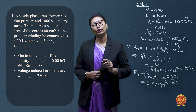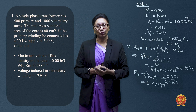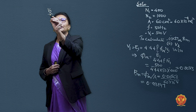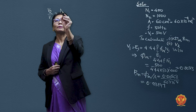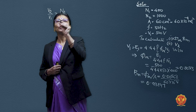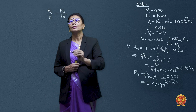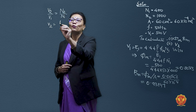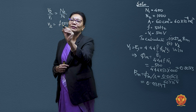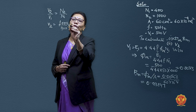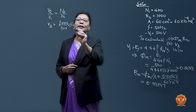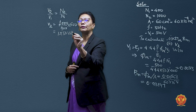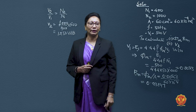Next, we calculate the secondary induced voltage V2. Using the turns ratio expression V2/V1 = N2/N1, and substituting the known values: V2 = (1000 ÷ 400) × 500. This gives us V2 = 1250 volts in the secondary winding.